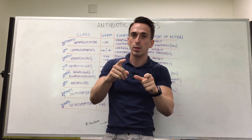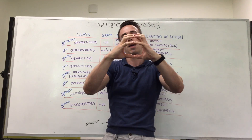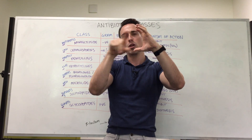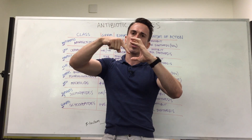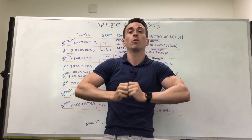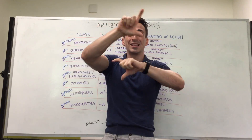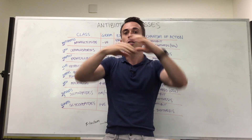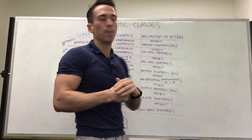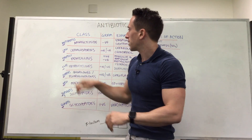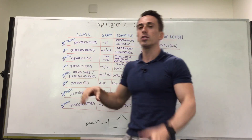This is important because bacteria are hyperosmotic — they have a lot of dissolved material inside, so water wants to rush in. When water rushes in, it would burst the cell, and the cell wall prevents that. If you destroy the cell wall, you destroy the bacteria. Moving on — P for protect stands for penicillins.